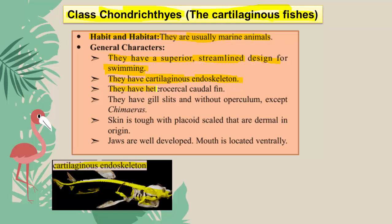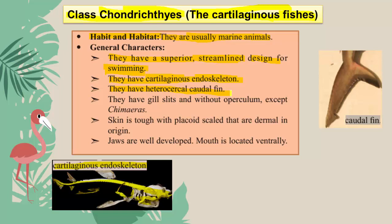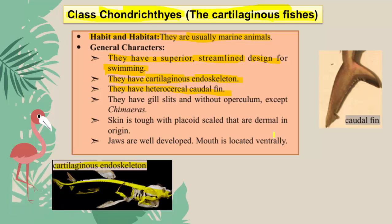They have a heterocercal caudal fin. Fins are meant for swimming; they allow continuous swimming. The image shows the caudal fin which is unequally divided, and this is called the heterocercal caudal fin, which is present in members of Chondrichthyes.